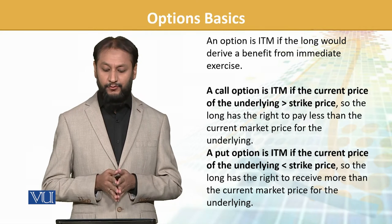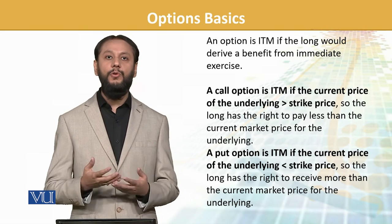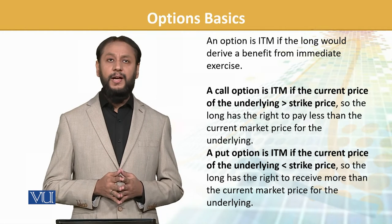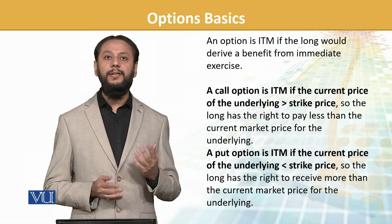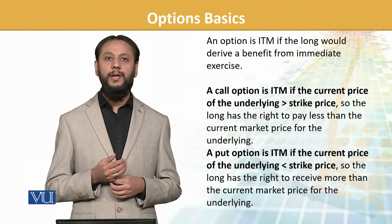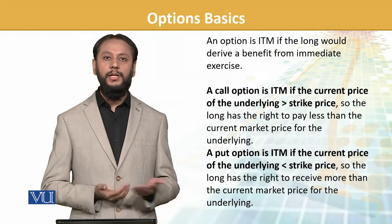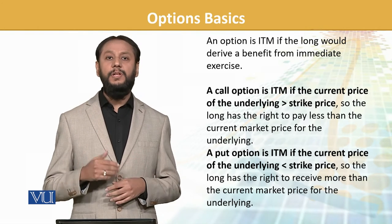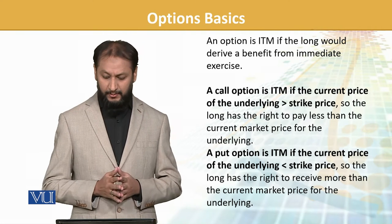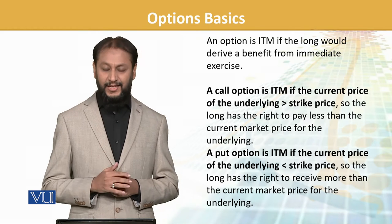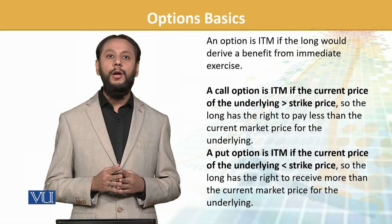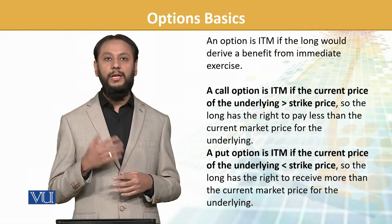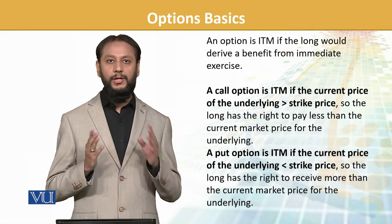An option is in the money if the long would benefit from immediate exercise. For example, if I have a call option and I want to convert it right now, I would save some money — that option is in the money. A call option is in the money when the current spot price of the underlying is greater than the exercise price — for instance, I can buy something at 60 but the market price is already 70, so if I buy at 60 and sell at 70, I gain. A put option is in the money when the current spot price is less than the strike price — for example, I can sell a stock at 100 and the market price is 85, so I can sell it and make an extra gain of 15. We need to be careful to note whether we are talking about a call option or a put option.